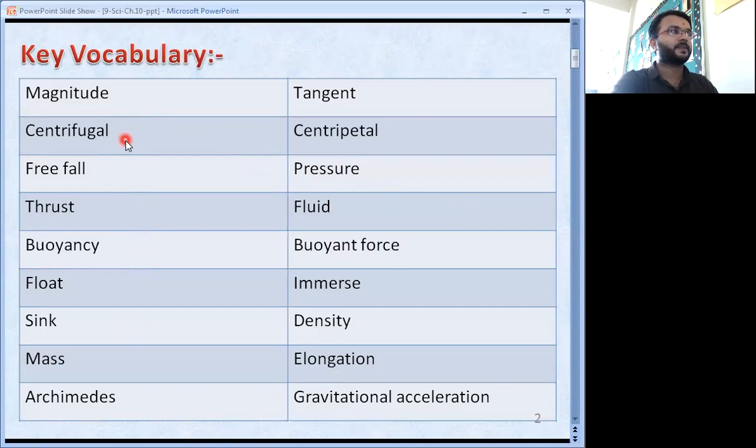Magnitude, centrifugal, pre-fall, thrust, buoyancy, float, sink, mass, Archimedes, tangent, centripetal, pressure, fluid, buoyant force, immerse, density, elongation, gravitational acceleration. So these are the important words for this chapter number 10.